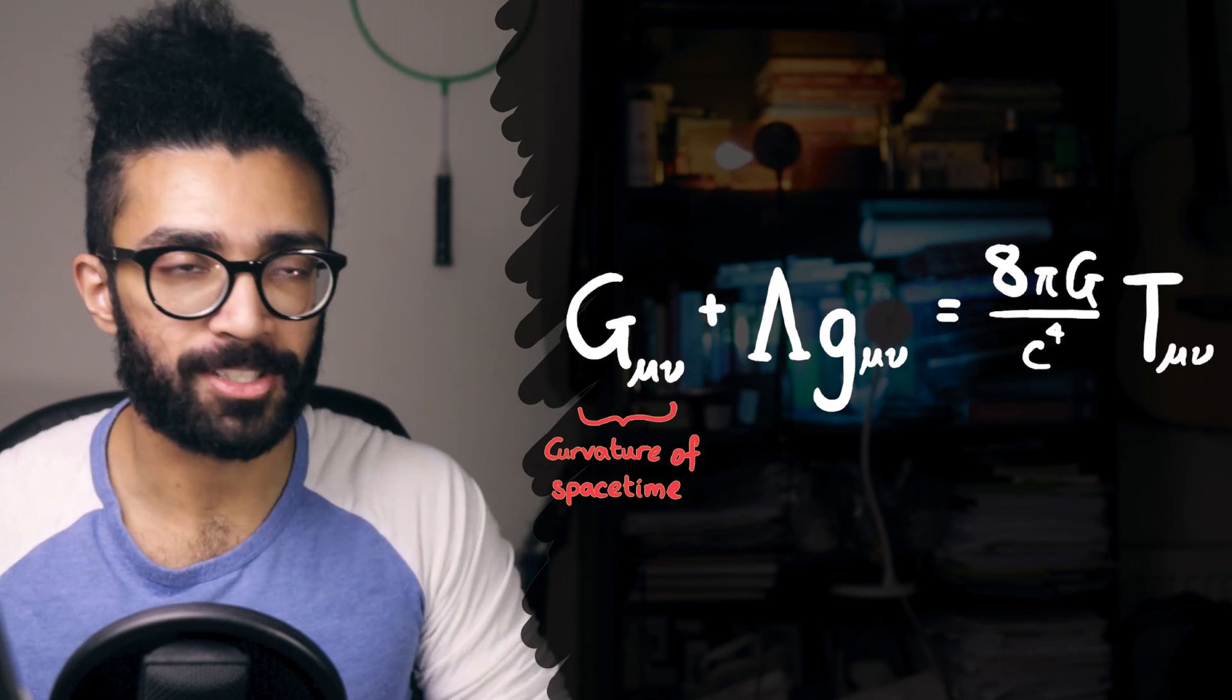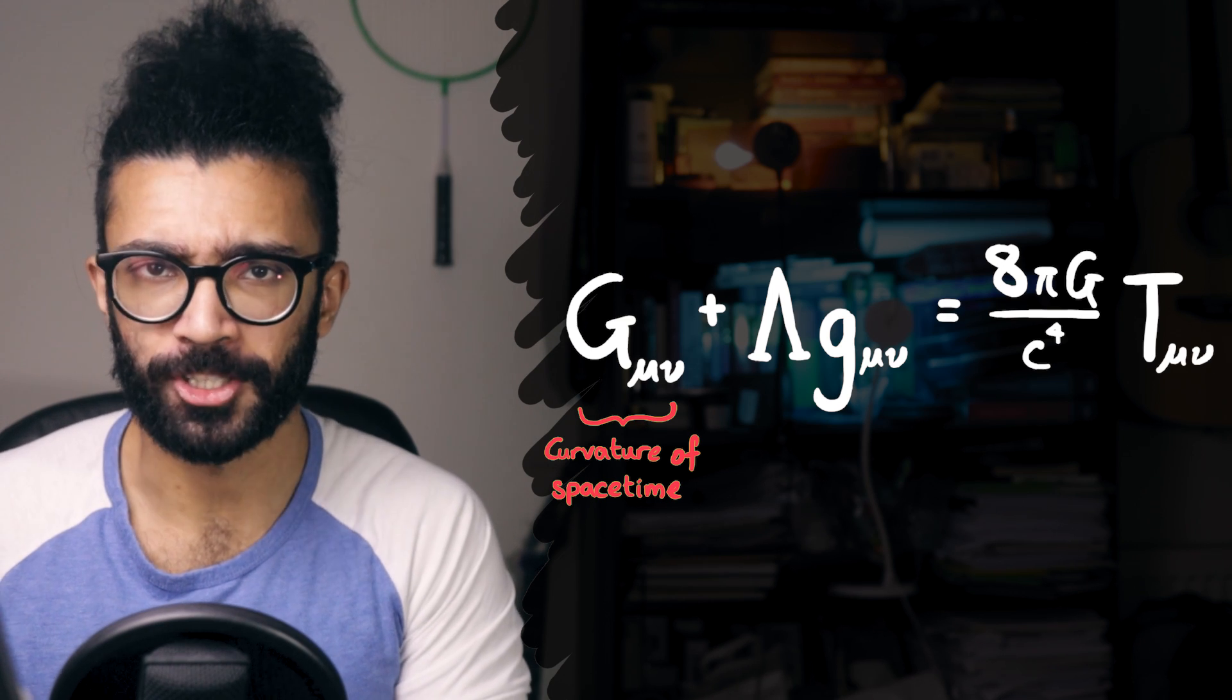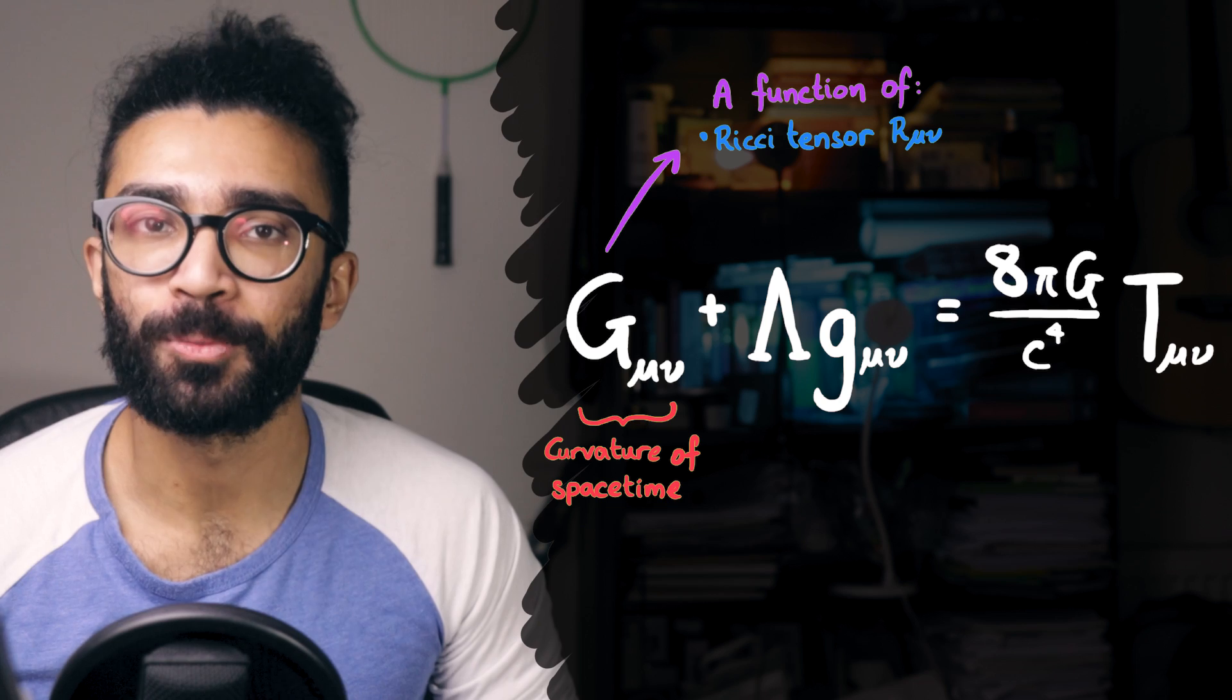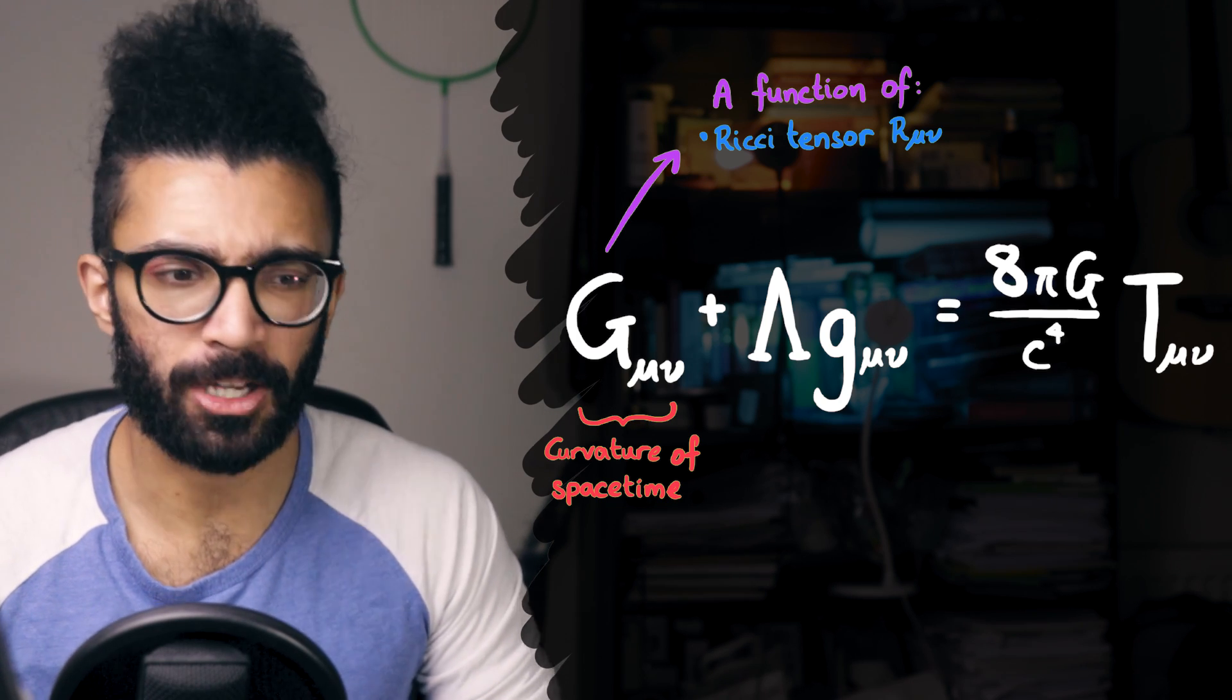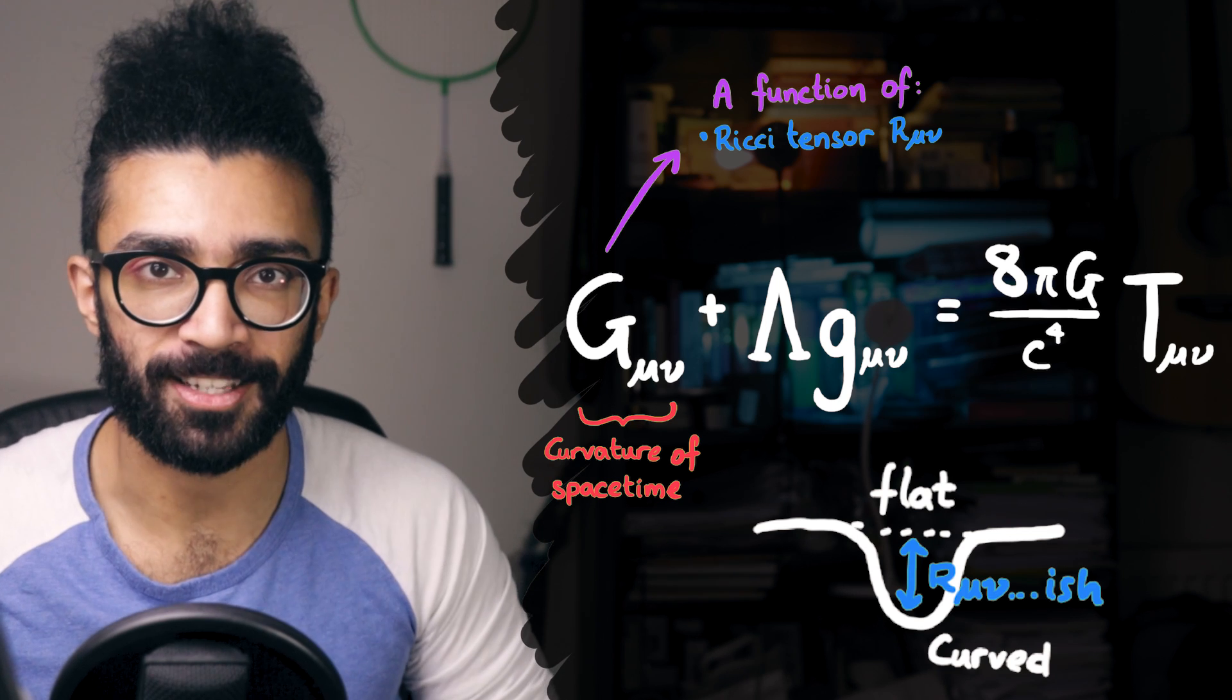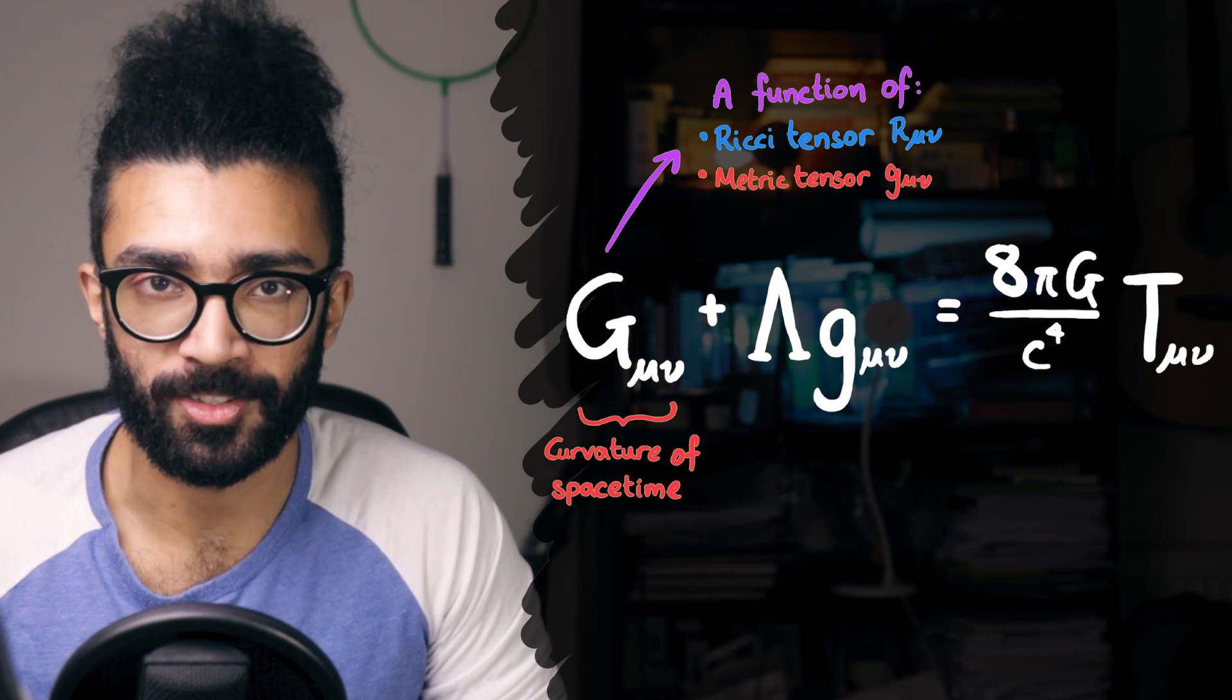Now, capital G mu nu, the Einstein tensor, is a rather complicated function of a few other tensors, such as the Ricci tensor. We won't look into that in too much detail here, but basically, it tells us something about how different the spacetime is to flat spacetime. And it's a function of the metric tensor, lowercase g mu nu.